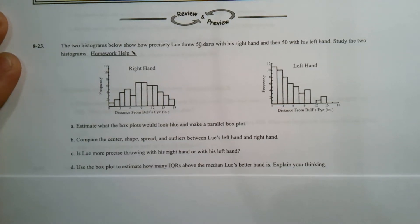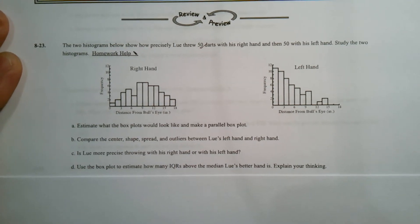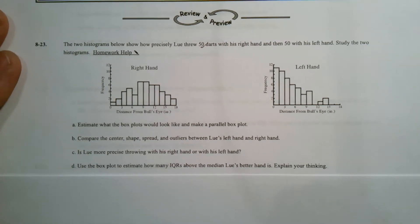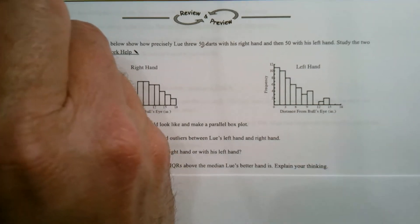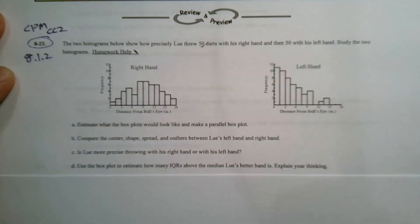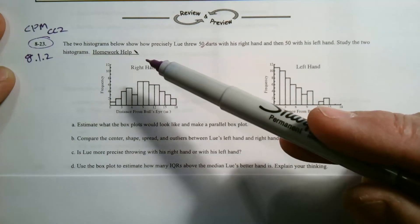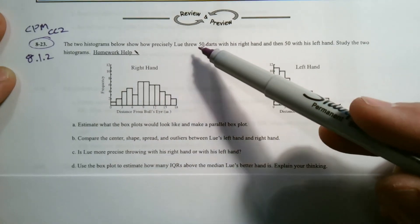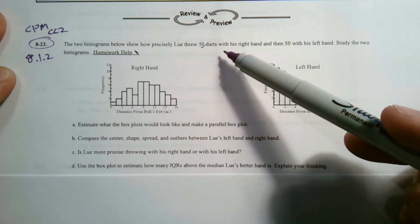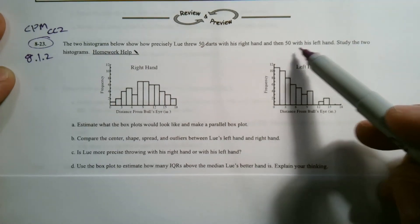Hey folks, Mr. Dell here. We are looking at histograms and box plots. Given some histograms, can we estimate what a box plot would look like with that data and then make some interpretations from that as well? This specific problem is coming from CPM, course two — CC2, section 8.1.2, number 8-23. It says the two histograms below show how precisely Lou threw 50 darts with his right hand and then 50 with his left hand.